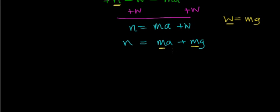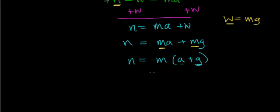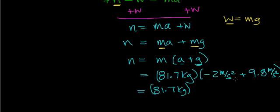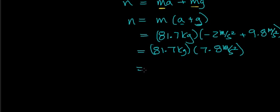We can factor the mass term out of both terms to simplify the problem and make plugging in numbers easier. This gives: N equals mass times the quantity (acceleration plus gravitational acceleration). In this case, the mass is 81.7 kilograms, the acceleration of the elevator is negative 2 meters per second squared, and the gravitational acceleration is 9.8 meters per second squared. So: N equals 81.7 kg times (−2 + 9.8) m/s², which is 7.8 m/s², working out to 637.5 Newtons.